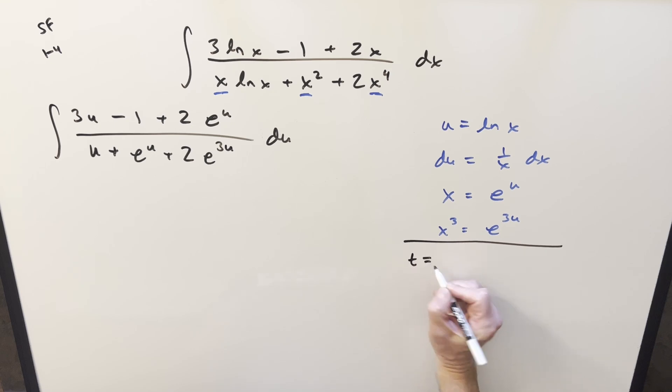So as we already substitute, let's use a different variable. I use t and substitute for the whole denominator because that would be nice if it would work. So this would be u plus e to the u plus 2 e to the 3u. Take a derivative. What's going to happen? When we get, this is just 1, derivative of e to the u is e to the u. And then this last one, we need to remember the 3s. This is going to become 6e to the 3u du.